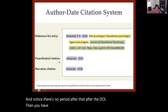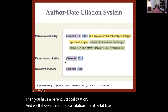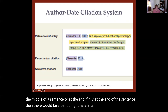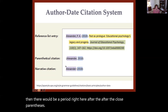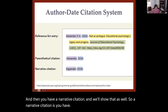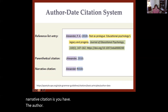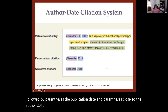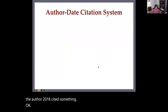Then you have a parenthetical citation — which can appear in the middle of a sentence or at the end. If it is at the end of the sentence, there would be a period after the closed parentheses. And then you have a narrative citation. A narrative citation has the author followed by the publication date in parentheses — for example, 'the author (2018) cited something.'